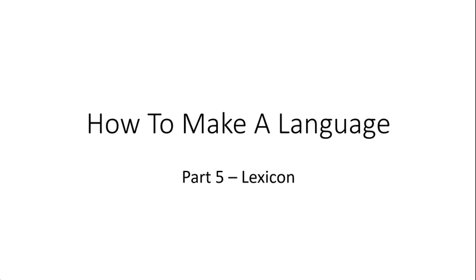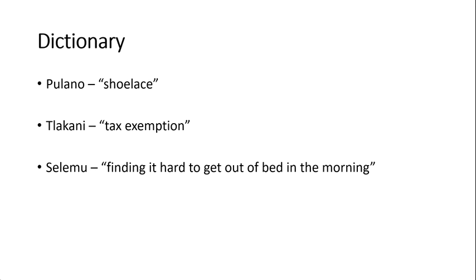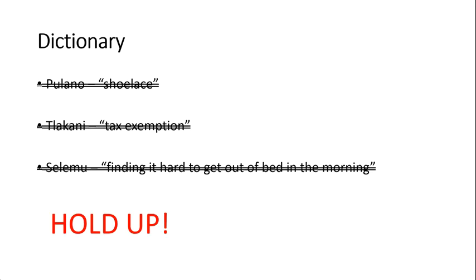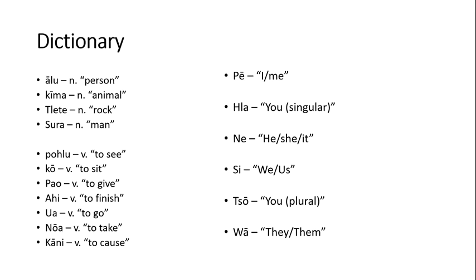Now that we know the ins and outs of the grammar, we're ready to start making words. But before you go crazy pulling words out of thin air, there's a few things that you should be aware of. As I said last time, at this point you're free to start coining root words — basic irreducible concepts that couldn't conceivably be derived from some other word.